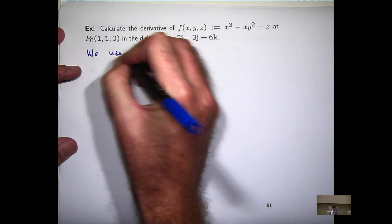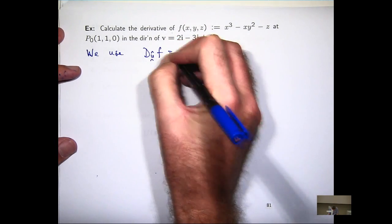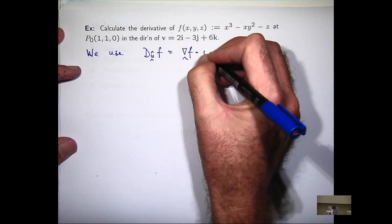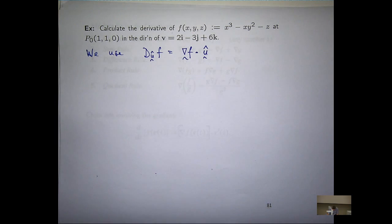Again, we use the dot product. So D_v f is just the dot product of these two vectors. Of course, dot product makes sense when we have vectors in three dimensions, no problem.